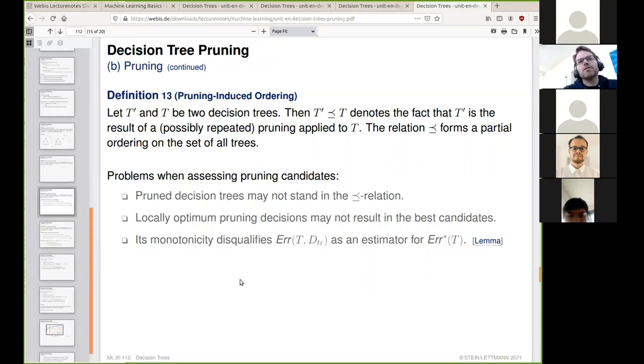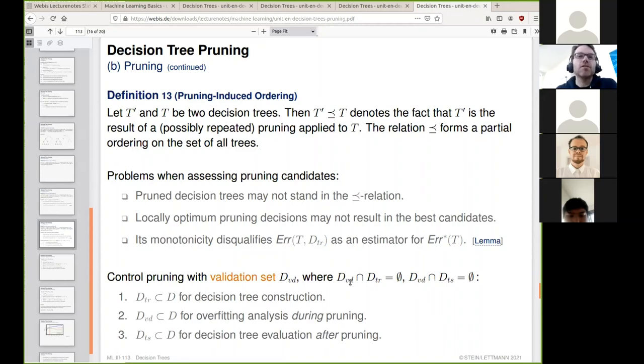A second problem is that we cannot be sure that deciding based on error reduction on training data will gain an advantage on test data or with true misclassification rate. This is why we must do validation. We need a validation set in addition to a test set, and these all need to be mutually exclusive. We train the T_max tree on training data, use validation data for pruning, and then finally test on the test set after we finish pruning.